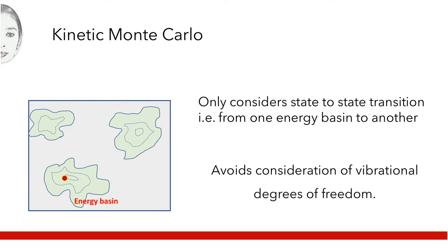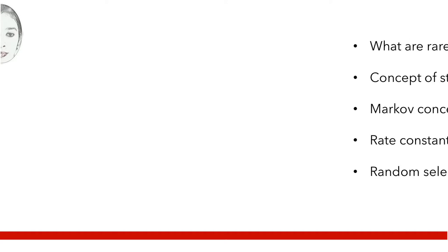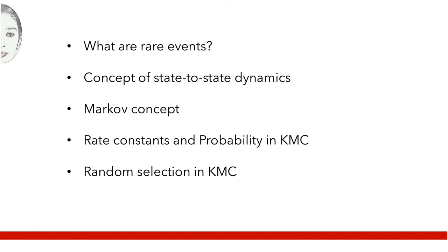In this video, I will throw more light on this phenomenon and some related concepts. We will cover what are rare events, the concept of state-to-state dynamics, the Markov concept, the rate constants and the probability of the next event in Kinetic Monte Carlo, and how the random selection is made.